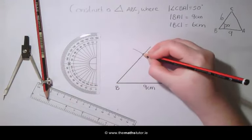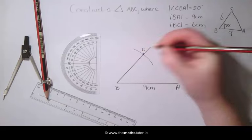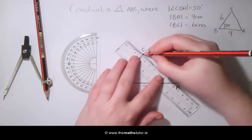Mark this point of intersection and this is our third point C. We can now draw the third side of the triangle.